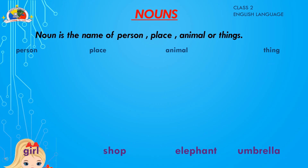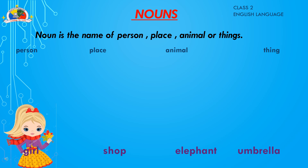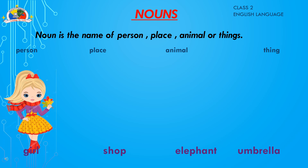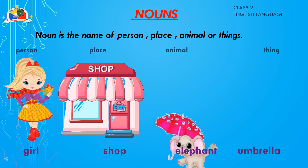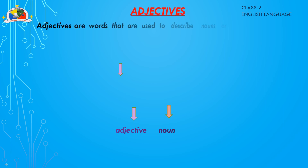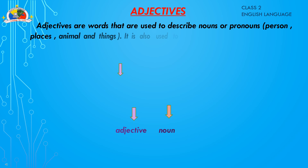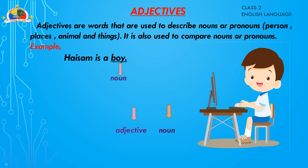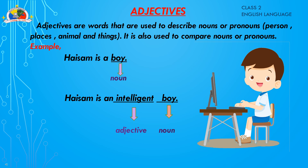As you know, a noun is the name of a person, place, animal, or thing. Here, the girl is a person, shop is a place, elephant is an animal, and umbrella is a thing. Now, adjectives are words used to describe nouns or pronouns. For example, 'intelligent' in 'intelligent boy' tells us more about the noun 'boy' — it describes the noun, so 'intelligent' is a describing word and is called an adjective.